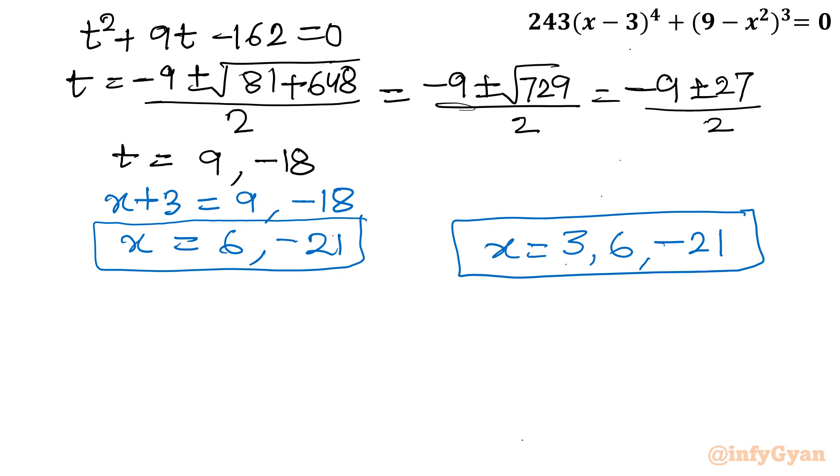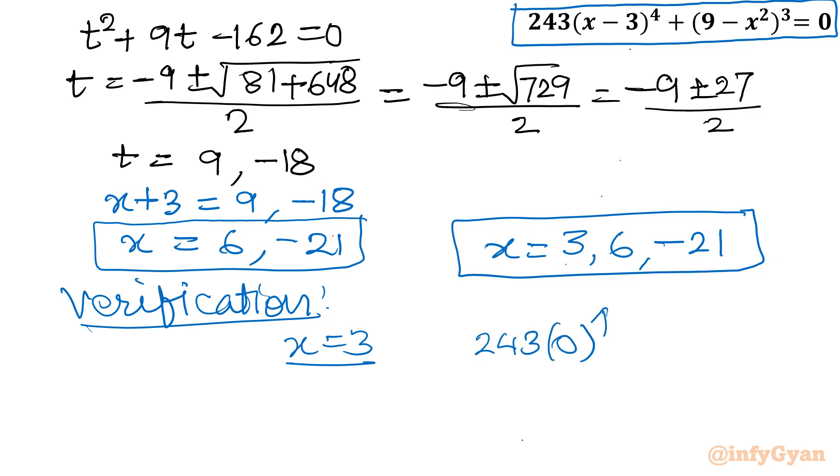Let me verify all the three values. So I will put x is equal to 3 here. What will happen? 243 times 0 to the power 4 plus 0 to the power 3, so it is 0. No need to check for 3.